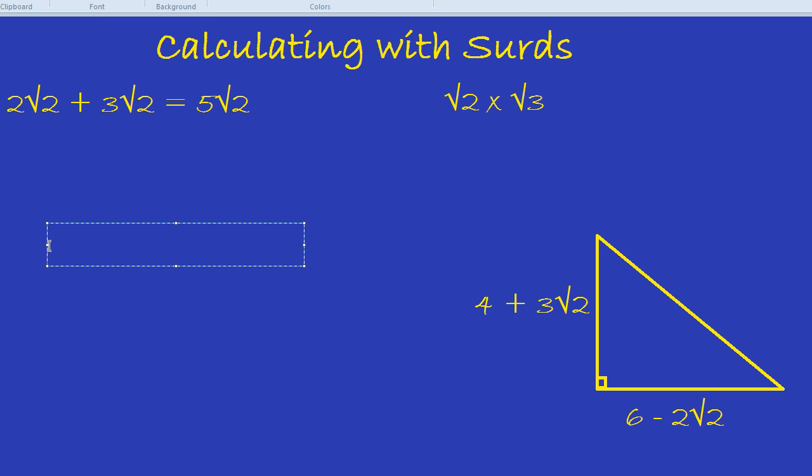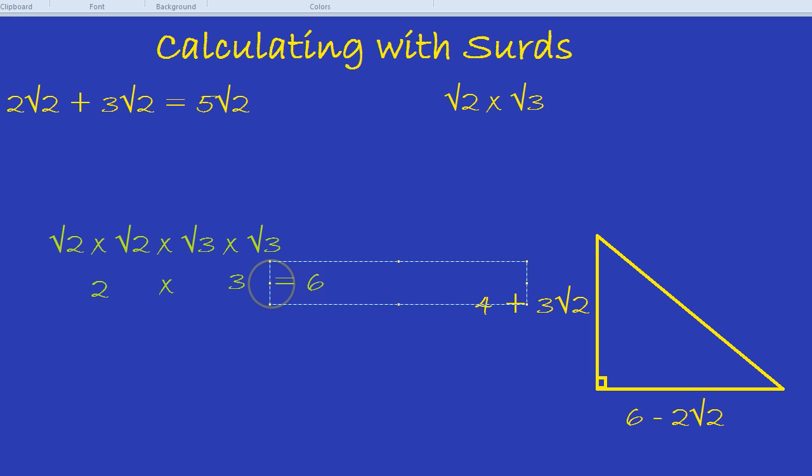For example, if I said, what's root 2 times by root 2 times by root 3 times by root 3, what would that be? You'd probably say, okay, from what we did before, root 2 times root 2 is 2 and root 3 times root 3 is 3. So the answer is going to be 2 times 3, which is 6. And you'd be right.